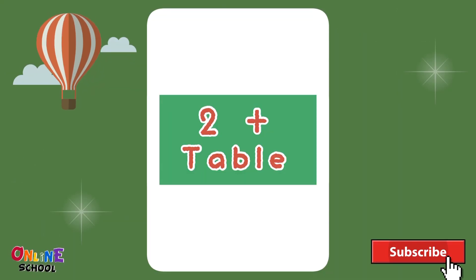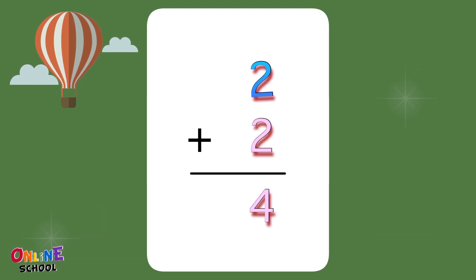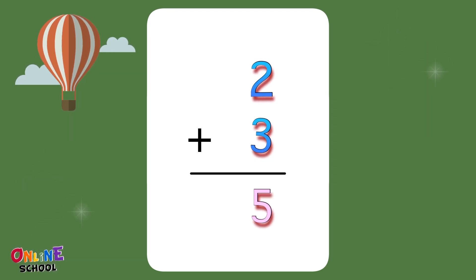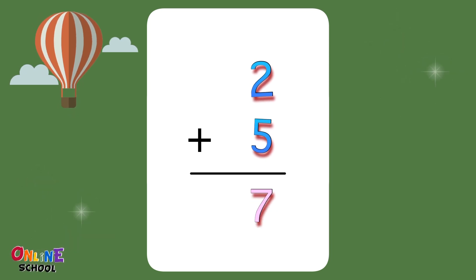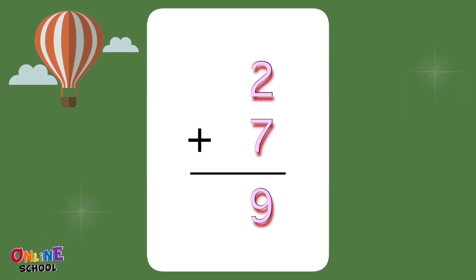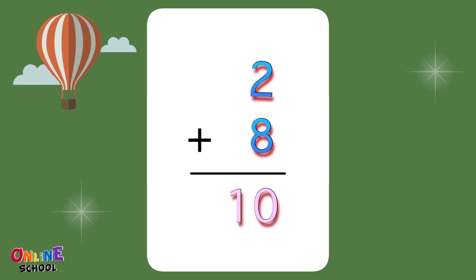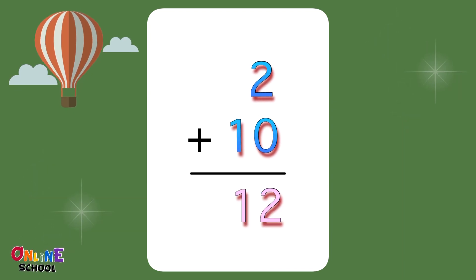Table 2: 2 plus 1 equals 3, 2 plus 2 equals 4, 2 plus 3 equals 5, 2 plus 4 equals 6, 2 plus 5 equals 7, 2 plus 6 equals 8, 2 plus 7 equals 9, 2 plus 8 equals 10, 2 plus 9 equals 11, 2 plus 10 equals 12.